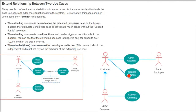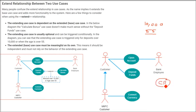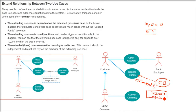Now let us add the extend relationship. If somebody deposits more than ten thousand dollars or is over 55 years old, we are going to give them a bonus. The extend relationship only applies when a condition is required — anyone below 55 or with less than ten thousand dollars won't get it. So we add 'calculate bonus,' and draw a dotted line from 'calculate bonus' to 'deposit funds' with the label 'extend' in double angle brackets. The condition can be written: amount above ten thousand and age greater than 55.